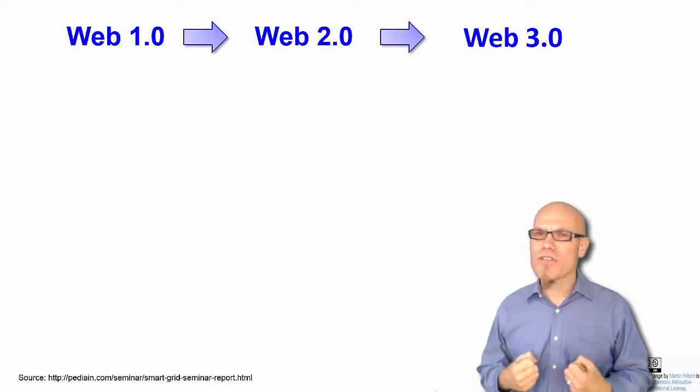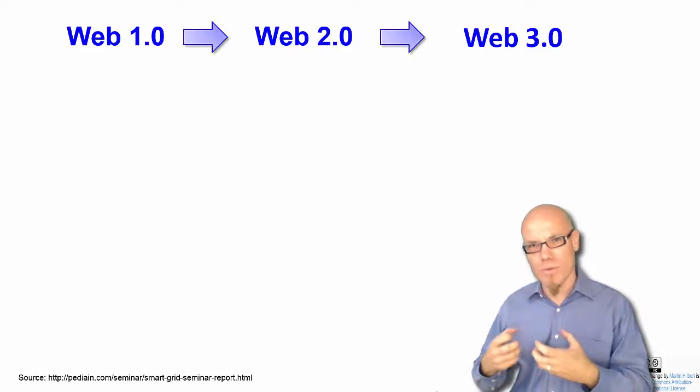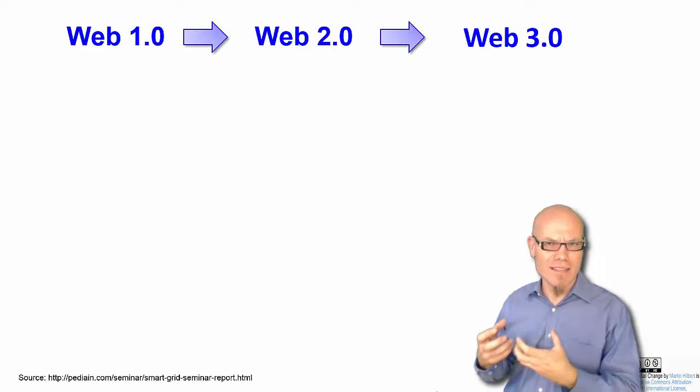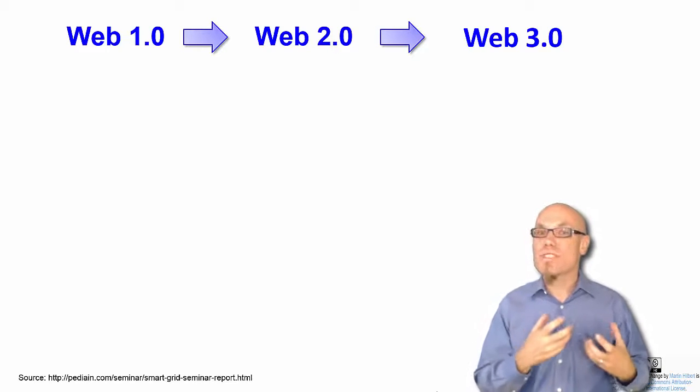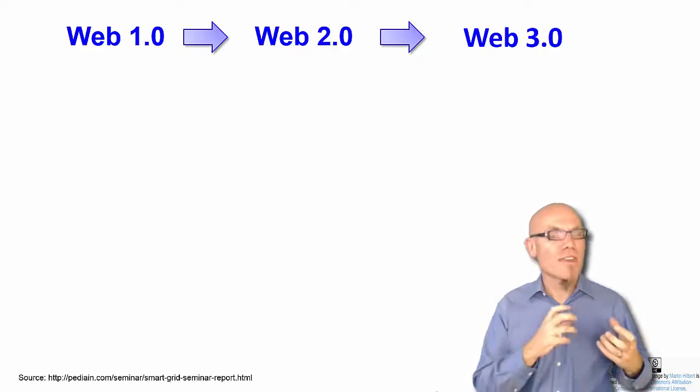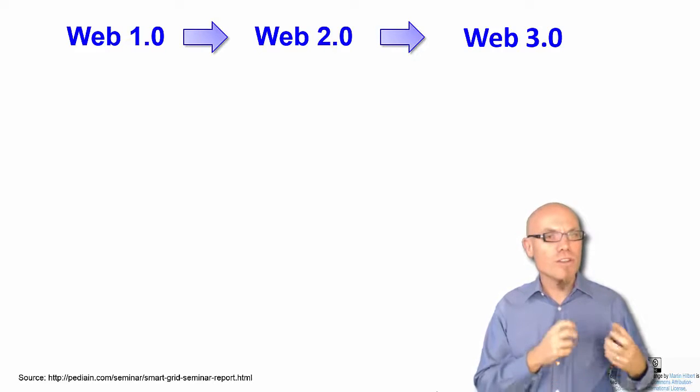Now the revolution of the Web 2.0 was the revolution of the people. Now suddenly, individuals had web pages. Before as well, some musicians, artists, academics, they had some web pages. But with social media, for example with Facebook and so forth, every individual could suddenly now have a web page.